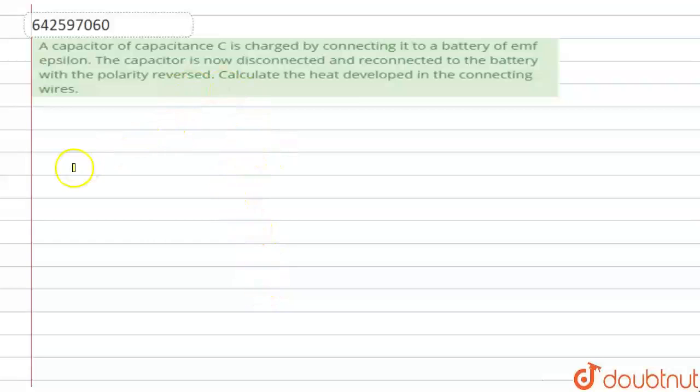Hello students, let's solve the question. The question is: a capacitor of capacitance C is charged by connecting it to a battery of EMF epsilon. The capacitor is now disconnected and reconnected to the battery with the polarity reversed. Calculate the heat developed in the connecting wires.